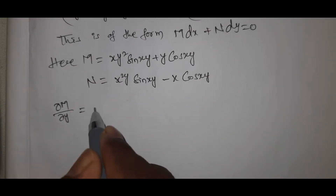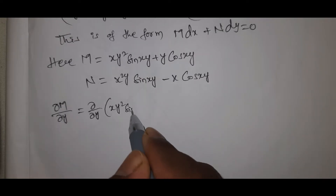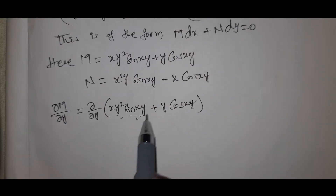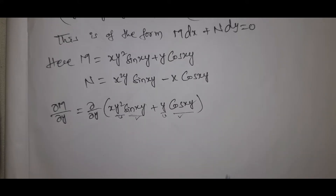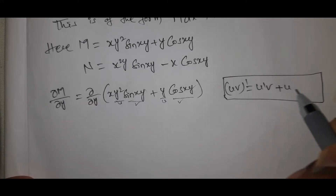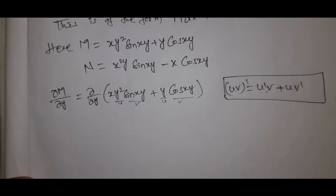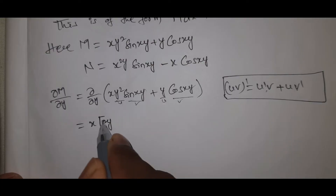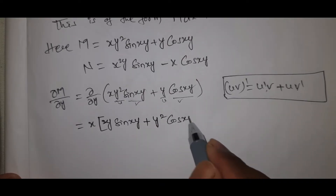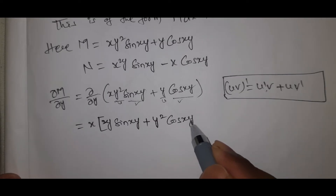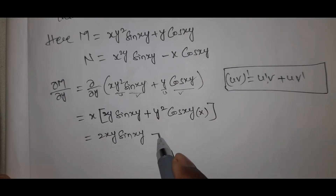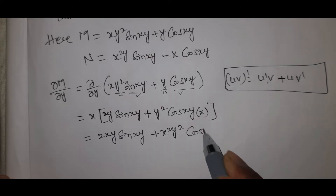Now, ∂M/∂y equals ∂/∂y of (xy²·sin(xy) + y·cos(xy)). We use the product rule u·v formula: u'v + uv'. First term: differentiating xy²·sin(xy), we get 2xy·sin(xy) plus x·y²·cos(xy)·x, giving 2xy·sin(xy) plus x²y²·cos(xy).